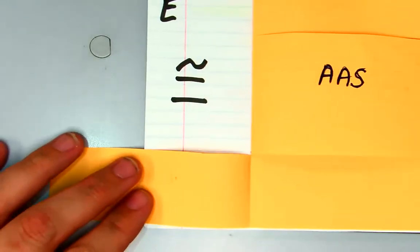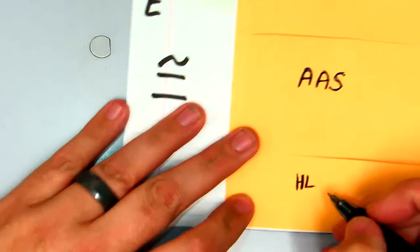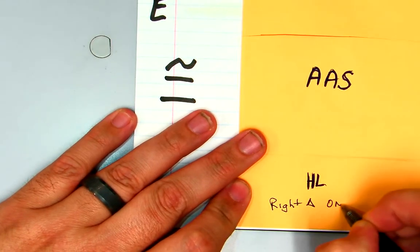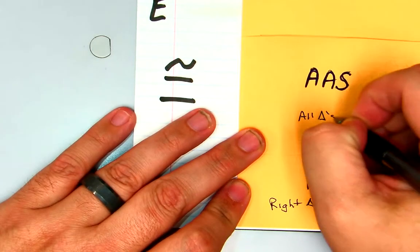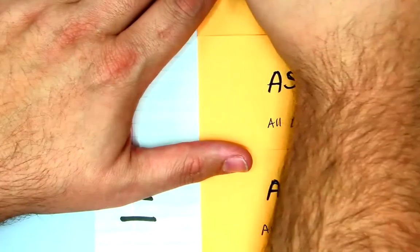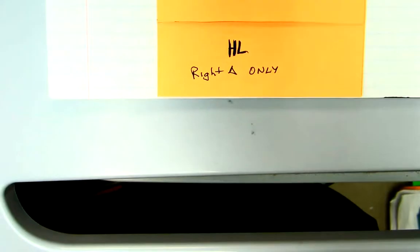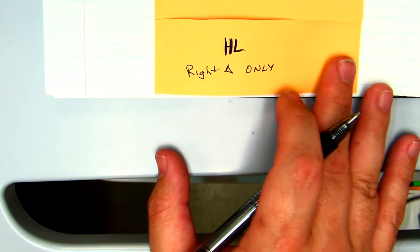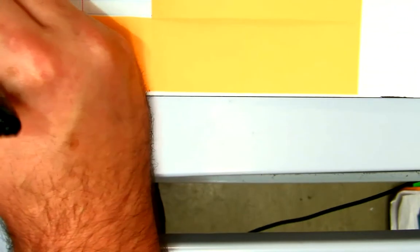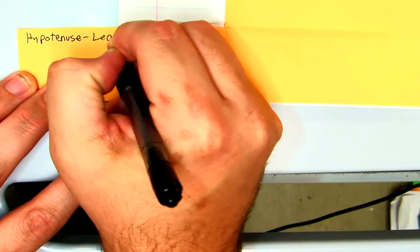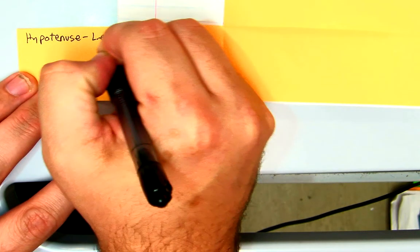Hypotenuse-leg. Last one. What triangle has a hypotenuse? Yeah. This is for right triangles only. This is for all triangles - all the other tests go for all triangles. This last test, hypotenuse-leg, is for right triangles only because the only triangle that has a hypotenuse is a right triangle. So for hypotenuse-leg, I'm way off the screen there. I apologize for my poor penmanship, but you all know about my penmanship.